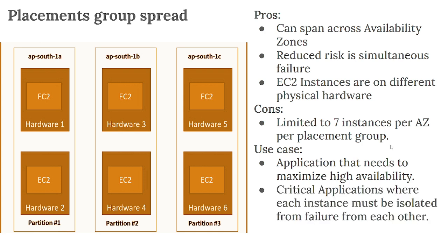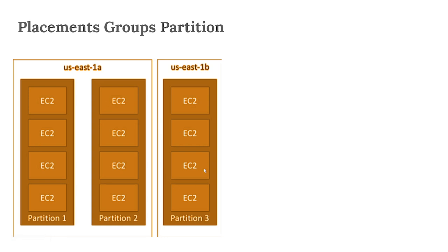The use case for Spread: applications that need to maximize high availability. Also critical applications where each instance must be isolated from failure — if the first instance fails, the instance on different hardware should work properly and not be affected. That's where we use Placement Group Spread.